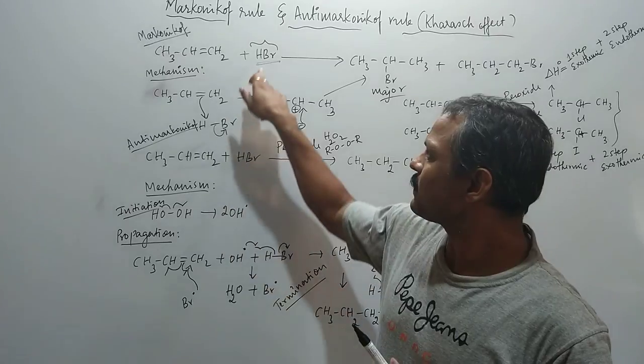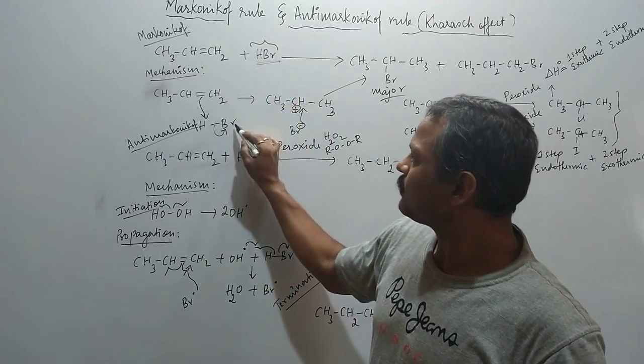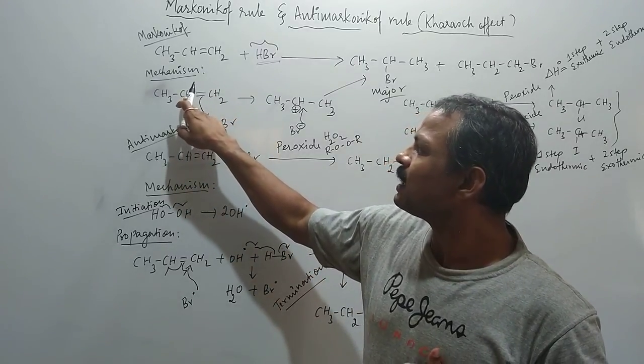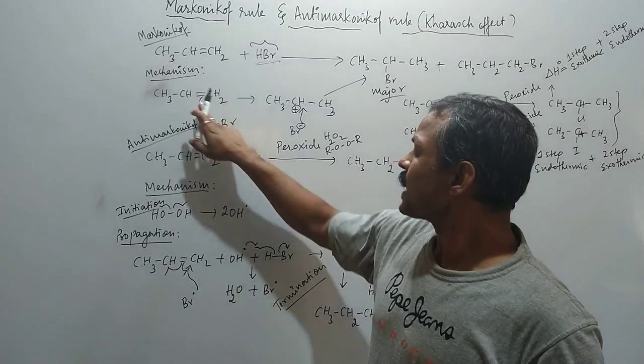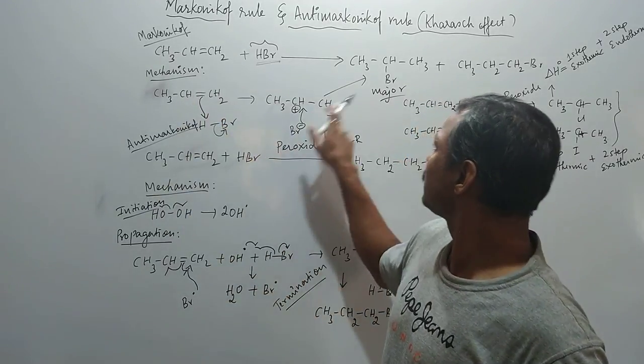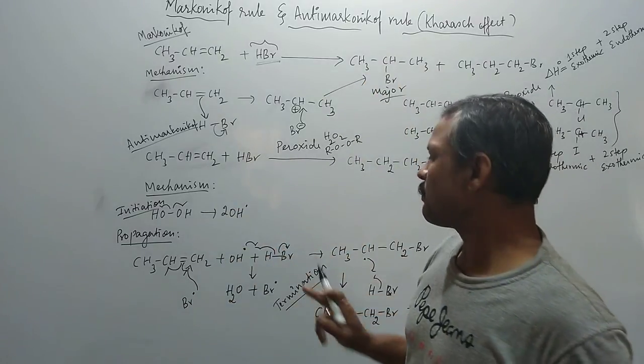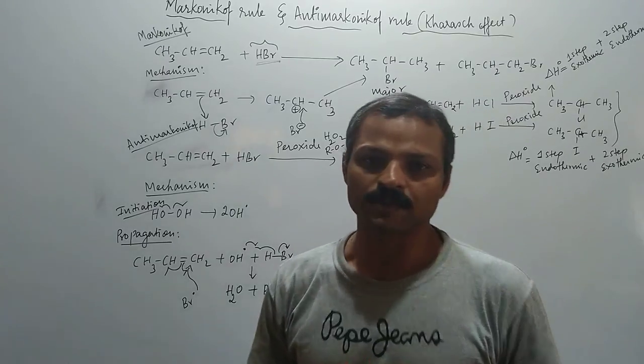So here we can see the nucleophile or electronegative atom, that means bromine, will attack the carbon atom which is having the lower number. I hope you understood. Thanks for watching.